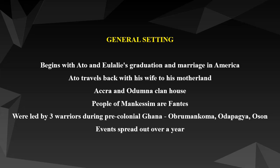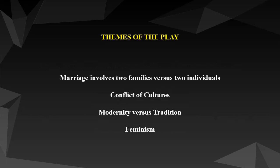Now let's see the general setting of the play. It begins with Ato and Eulalie's graduation and marriage in America. Ato travels back with his wife to his motherland in Ghana, specifically Accra, and to the Odomna clan house. Ato's home town could be Mankesim — the people of Mankesim are Fantes, who were led by three great warriors known as Obra Mancoma, Odapagya, and Osan during pre-colonial Ghana. The names of these leaders were mentioned in the prelude as part of Ato's history. The events of the play are spread out over a year.